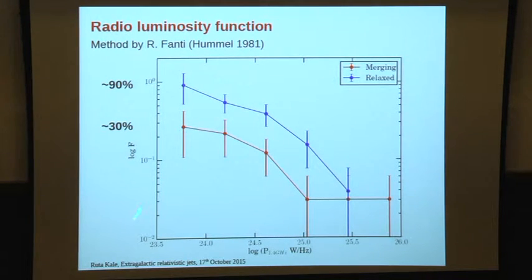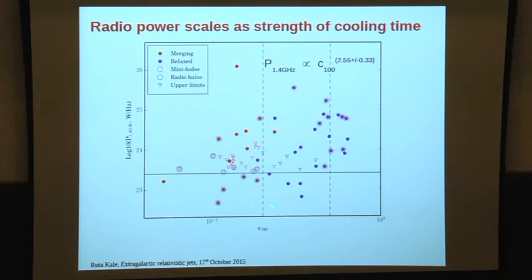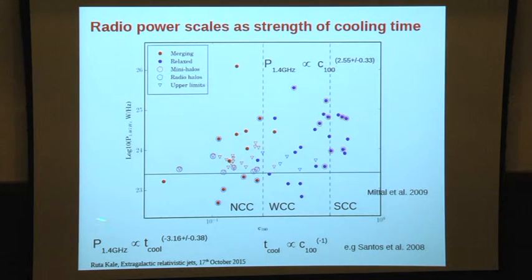The radio luminosity function separately for BCGs in merging versus relaxed clusters shows a big difference in the fraction of radio-loud BCGs. To compare with the literature, it is known that BCG radio luminosity scales with central cooling time (Mittal et al. 2009). We plotted radio power versus concentration parameter and found a scaling P versus C. Since cooling time goes as the inverse of concentration parameter, our result is consistent within its scatter.